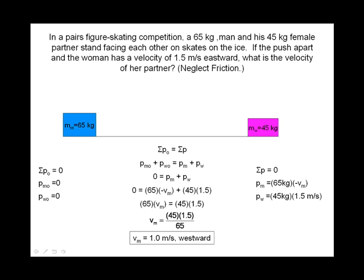VM, the velocity of the man, equals 1.0 meters per second in the negative direction.